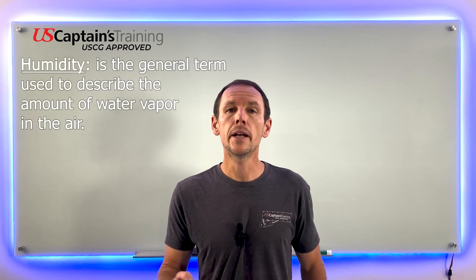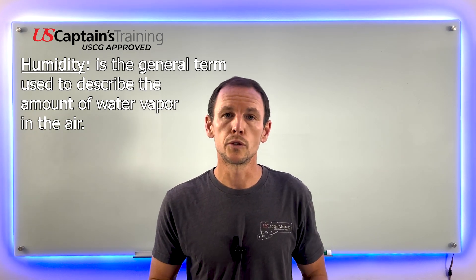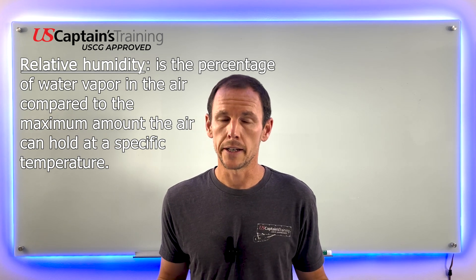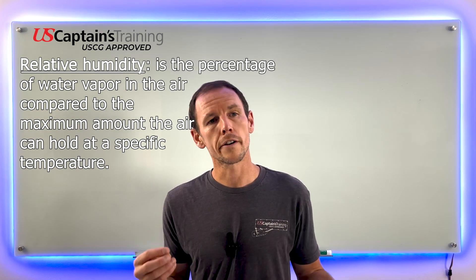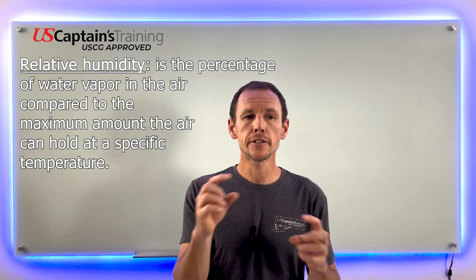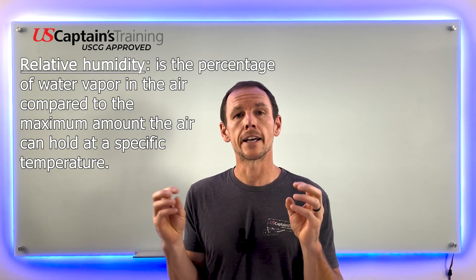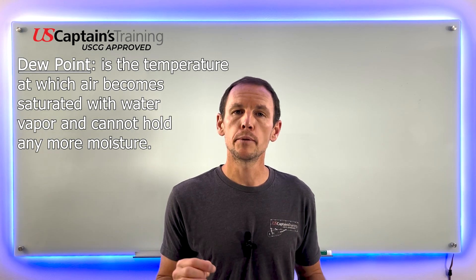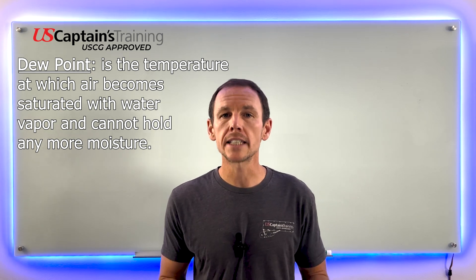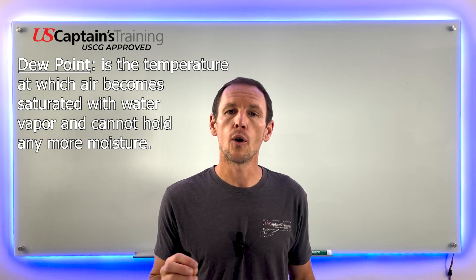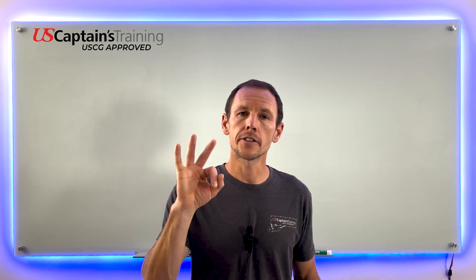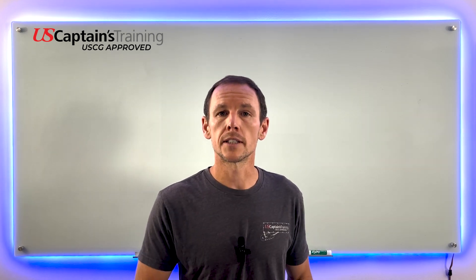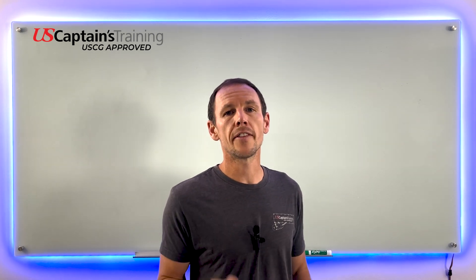To summarize: humidity is the general term to describe the amount of water vapor in the air. Relative humidity is the percentage of water vapor in the air compared to the total amount it can hold at that temperature. Dew point is the temperature at which the air becomes saturated with water and cannot hold any more water vapor. These are the three terms you should be familiar with for this section.